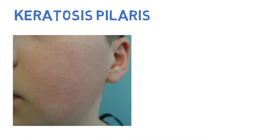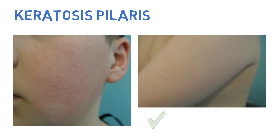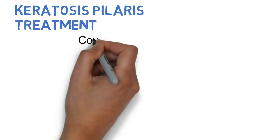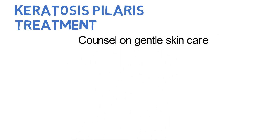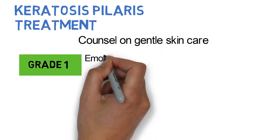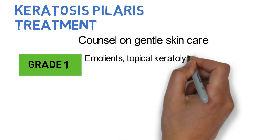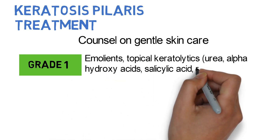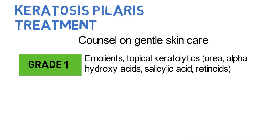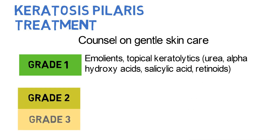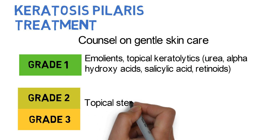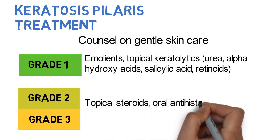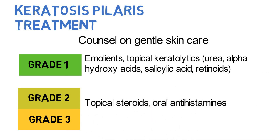Keratosis pilaris presents as diffuse keratotic papules in a generalized distribution and may be accompanied by significant pruritus. Treatment includes counseling on gentle skin care. For grade 1, the patient can use emollients and topical keratolytics such as urea, alpha-hydroxy acids, salicylic acid, and retinoids. For grades 2 and 3, consider topical steroids and oral antihistamines. Keratosis pilaris is generally self-limited.